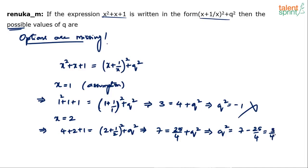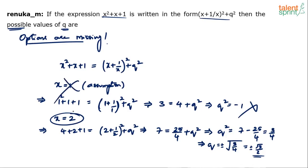So q² equals 3/4, which implies q equals ±√(3/4), i.e., ±√3/2. Now we have a numerical value. The options will present q in terms of x, so substitute x=2 in each option and see which one gives ±√3/2. That option is your answer.